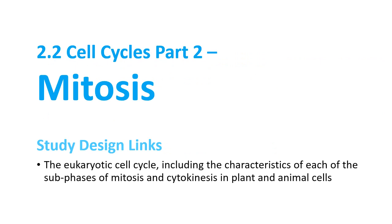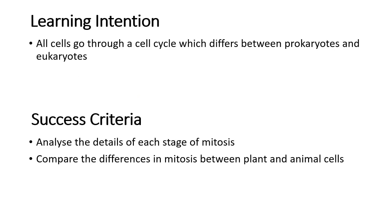We're moving into our second section on the cell cycle in eukaryotic cells, and this is all about mitosis. We've learned all the different stages: G1, S, and G2, and now we're into the details of what actually happens in mitosis. Your success criteria after this video should be to analyze all the different details for each stage of mitosis and compare the differences between plant and animal cells.